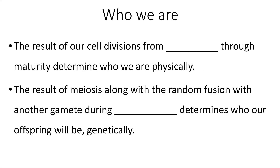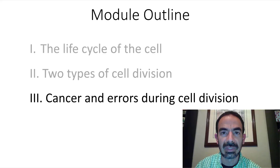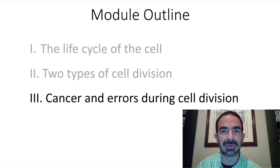The result of cell division from fertilization through maturity determines who we are physically. The result of meiosis, along with random fusion with another gamete during fertilization, determines who our offspring will be genetically. Cancer and errors during cell division are what we'll discuss in our last video for this module.